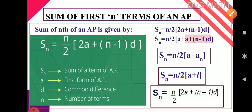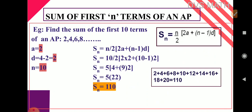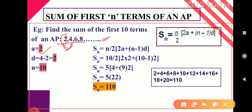Let me clarify using a simple example. Find the sum of the first 10 terms of the AP: 2, 4, 6, 8, so on. Here there is no last term given — only the sequence. Using the sequence, first term A is 2. Common difference D is 4 minus 2 equals 2. They are asking for the first 10 terms, so N equals 10. Since first term and common difference are given, we use the formula SN = n/2 * (2A + (n-1)d).